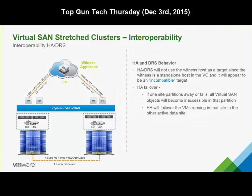Stretch clusters are also interoperable with vSphere HA and DRS. HA and DRS do not use the witness VM as a target — in the vSphere web client it will show up as an incompatible target, so nothing will be migrated there. During HA failover, if one site fails, all objects will become inaccessible on that fault domain and will move to the still-active site. This is precisely why each site should not exceed 50% utilization, so all VMs can run on the remaining site in the event of a failure.